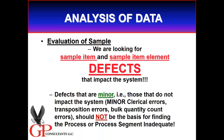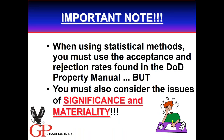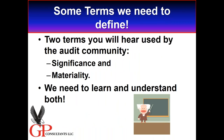I'm looking at defects — but I don't want to focus on minor defects: minor clerical errors, transposition errors that are not significant, bulk quantity count errors caused by scale count. Those types of minor defects should not be the basis for finding a process or process segment inadequate. I'm looking for two other issues: significance and materiality.